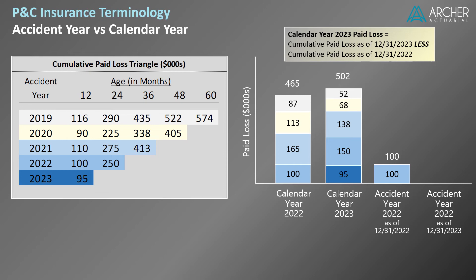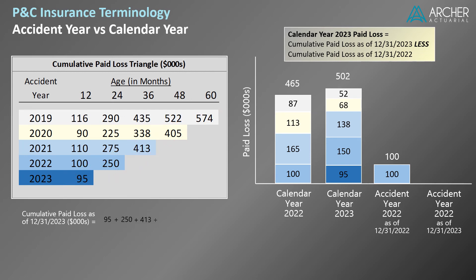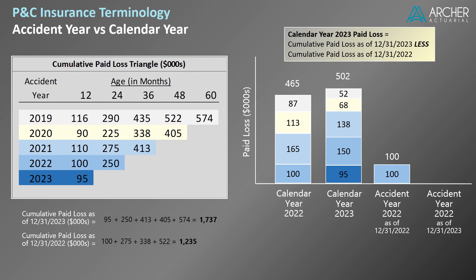Let's look at another way to calculate calendar year 2023 paid loss. First, we calculate the sum of the amounts along the 12-31-2023 diagonal. In total, cumulative paid loss as of 12-31-2023 across all accident years equals $1,737,000. Similarly, cumulative paid loss as of 12-31-2022 is the sum of the 12-31-2022 diagonal, which equals $1,235,000. Calendar year 2023 paid loss is the difference between these two amounts, which equals $502,000 — the same amount calculated earlier. The important thing is to recognize that the accident year detail is not necessary to calculate calendar year totals; it may be informative, but depending on the application, it may not be necessary.